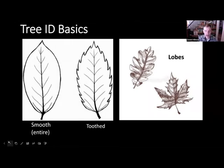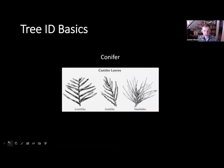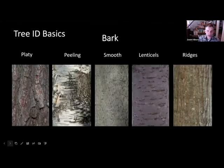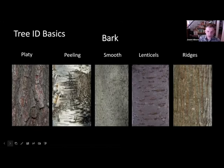We don't want to forget our conifers — they have leaves too; we just happen to call them needles. They're also called evergreens because they generally don't drop their leaves in the fall and look green year-round. To keep it simple, we'll break them into three categories: comb-like, which are spruces and firs; scale-like, which are generally cedars; and needle-like — think pines. We also had a question about identifying by bark. A great resource is the book Bark: A Field Guide to Trees of the Northeast by Michael Wutek.